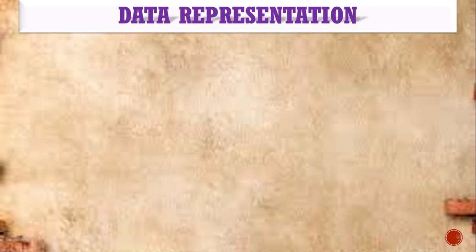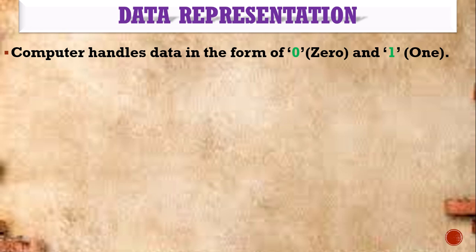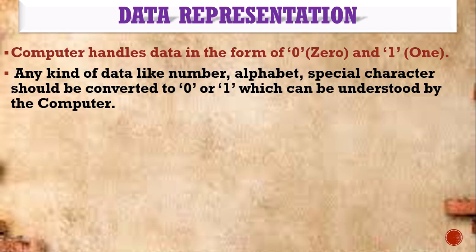Data representations. The computer handles data in the form of zeros and ones. Any kind of data — numbers, alphabets, special characters — should be converted into 0 or 1, which can be understood by the computer. As human beings, we know many languages and have our own language.